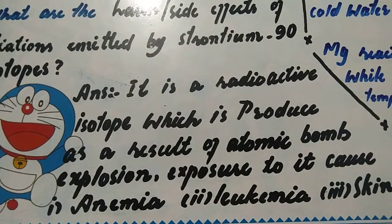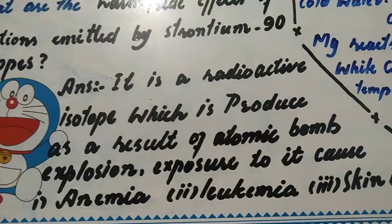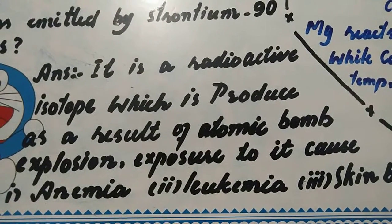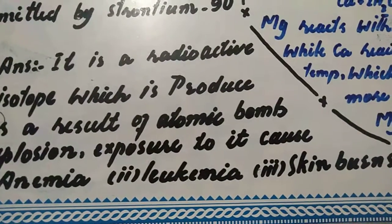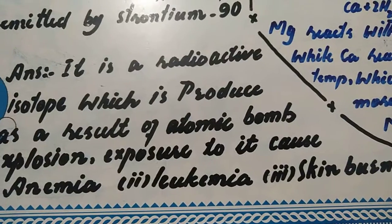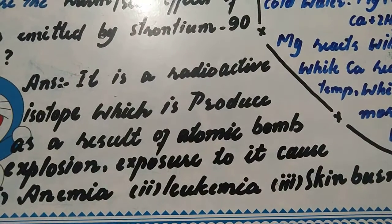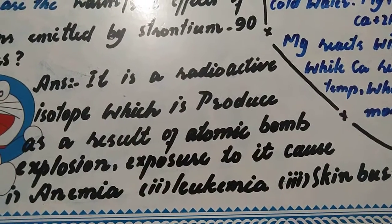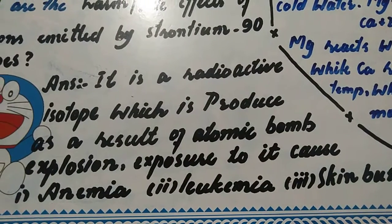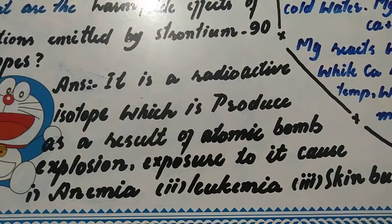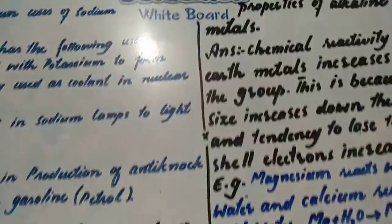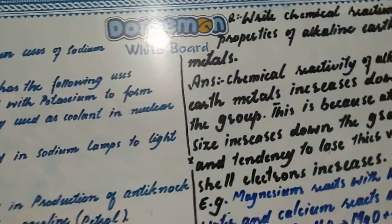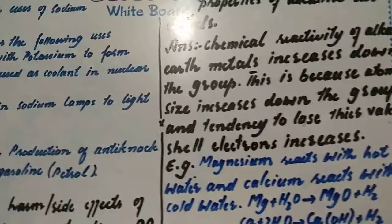Exposure to it causes anemia, leukemia which is bone cancer, and skin burns or skin cancer. Different types of cancer occur due to radiation. This is why atomic bomb or strontium-90 radiation is very fatal.